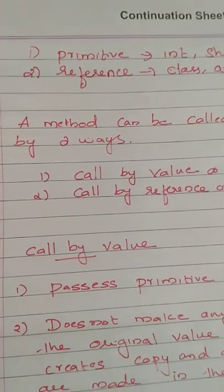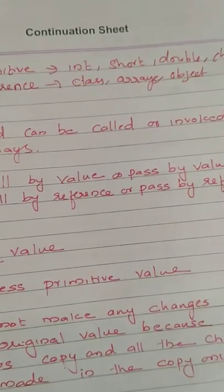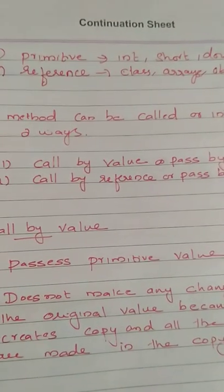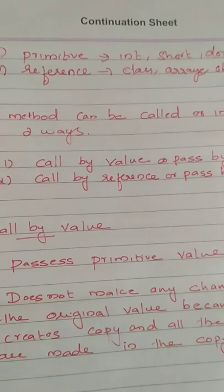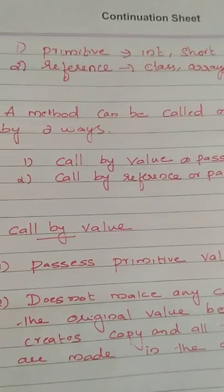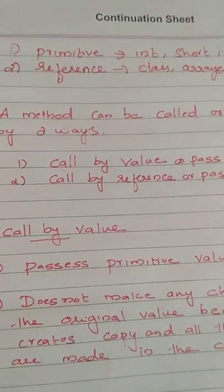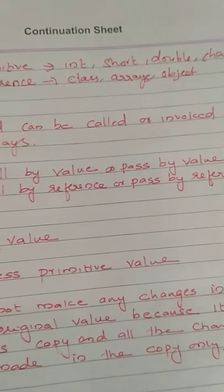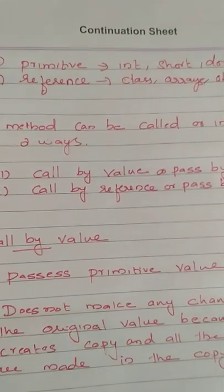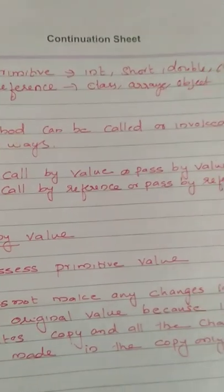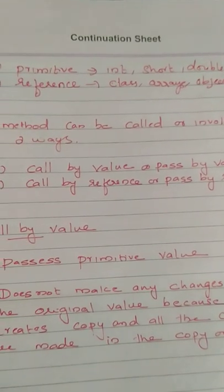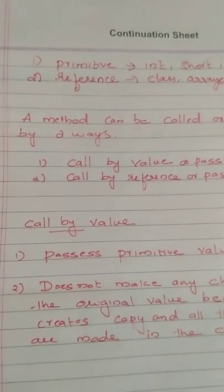A method can be called or invoked in two ways: call by value, also known as pass by value, and call by reference, also known as pass by reference. By these two ways a method can be invoked.